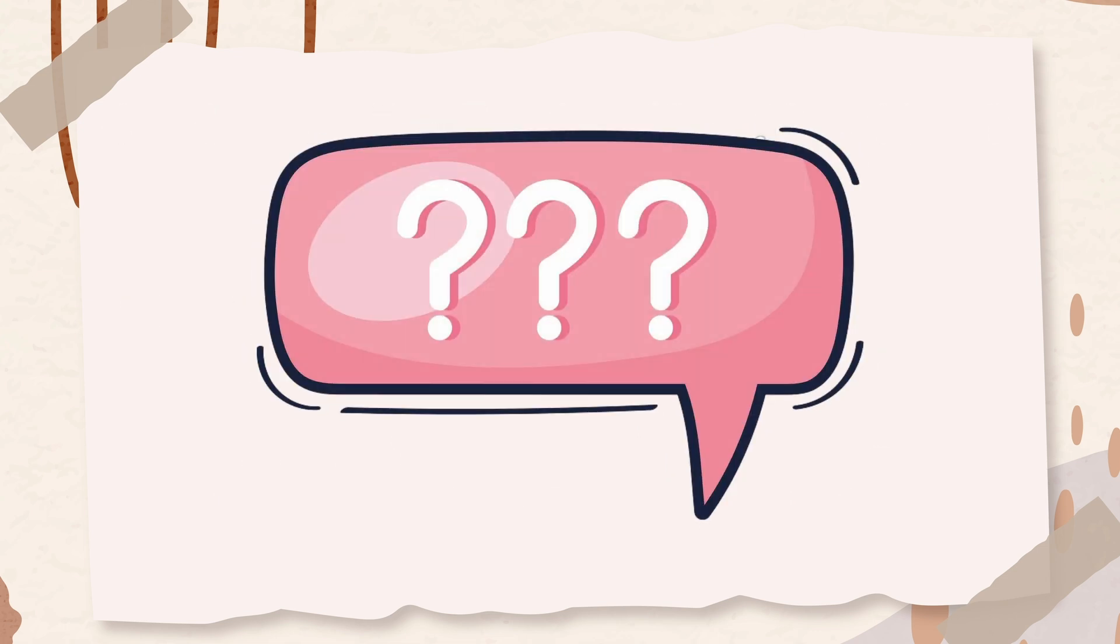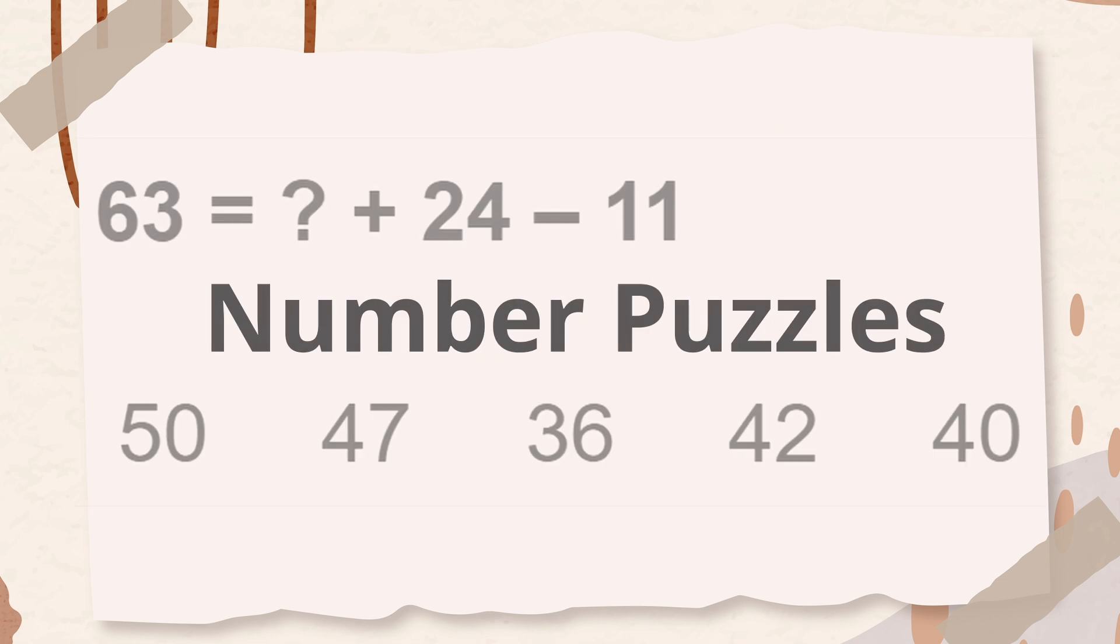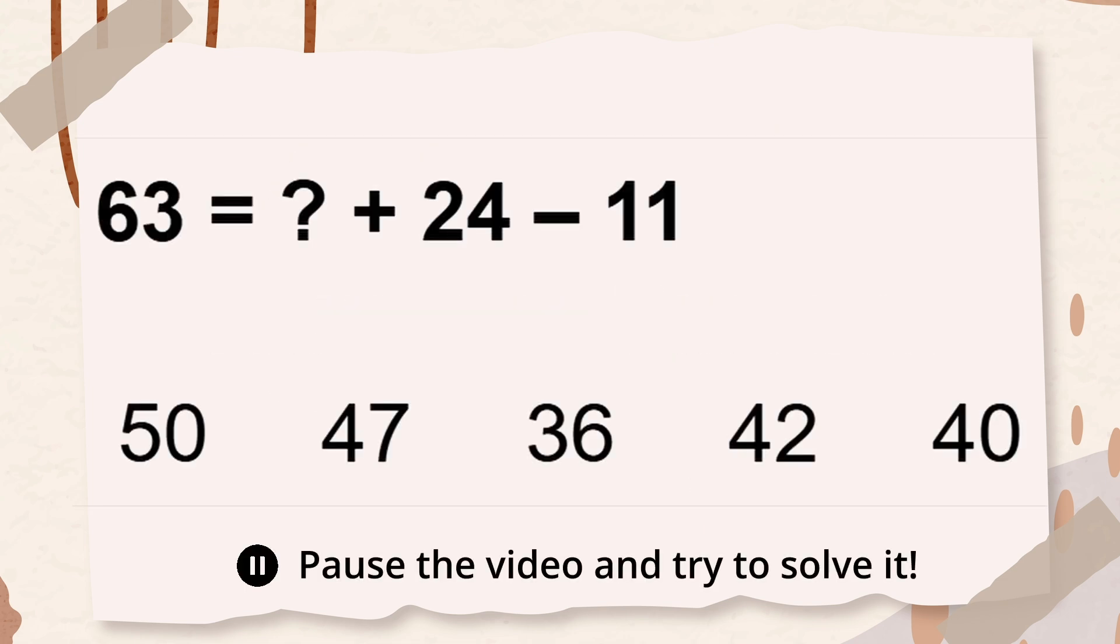The final subtest in this battery is number puzzles. In this question, you are given an equation with a missing number. You must solve the equation to determine what number is missing. We need to find the number that, when added to 24 and then subtracting 11, will give us 63.